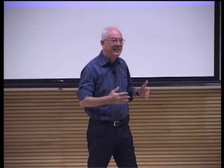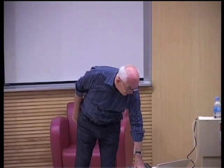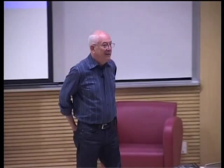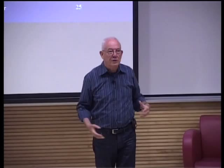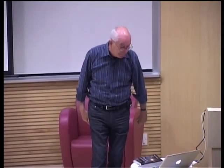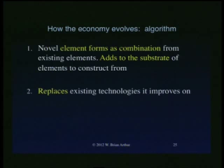Can we reduce this to mathematics? Heavens no is my initial instinct because mathematics tends to deal with quantities, and we're not talking about quantities — we're talking about new structures coming along. It's better to think about this as an algorithm. In this algorithm for how the economy forms and changes, some novel element comes along as a combination. The steam engine or railway locomotive adds to the collection of building blocks you can construct from. It goes on to replace existing technologies — when the transistor came along, it started to replace the vacuum tube over a number of years.